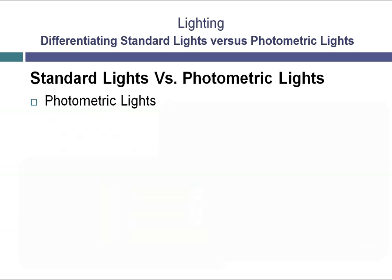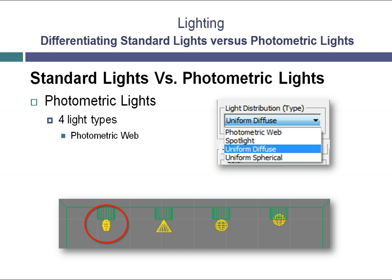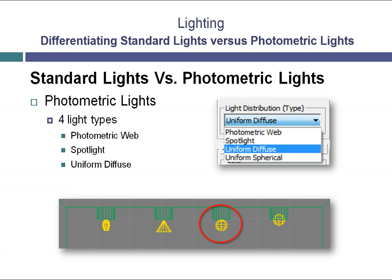Just like standard lights, photometric lights come in a variety of light types. The first, photometric web, is a unique and flexible light type that allows you to use photometric IES data files. These files define not only the light, but also how the light is emitted from a light fixture, shaping both the source object and the pattern of light emitted from it. The spotlight works the same as the standard spotlight, allowing you to simulate a variable pin spot. The uniform diffuse light works like a surface-mounted light bulb that shines light in a 180-degree hemisphere from the source. The uniform spherical style is a point in space that emits light in all directions, ideal for use as a regular light bulb.